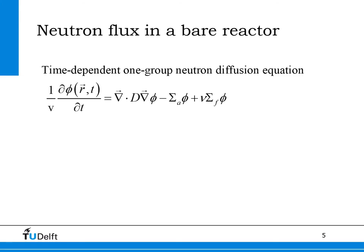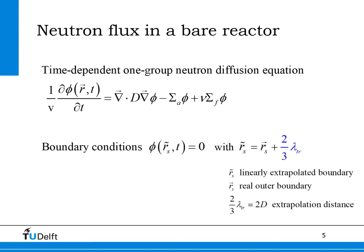The resultant of these three terms determines if the neutron flux increases or decreases in time or remains stationary. To solve this equation, we need boundary conditions. For a bare geometry, this is given in diffusion theory by putting the flux to zero at a linearly extrapolated boundary. We also need initial conditions, which implies that the neutron flux should be given at some time t, here indicated with time t equals zero.